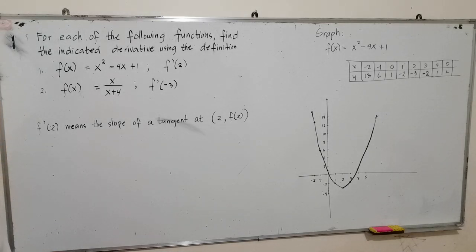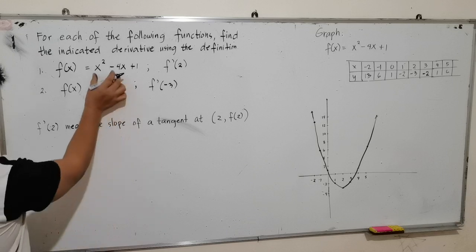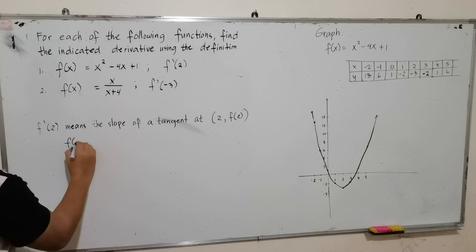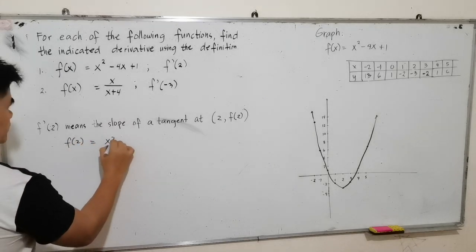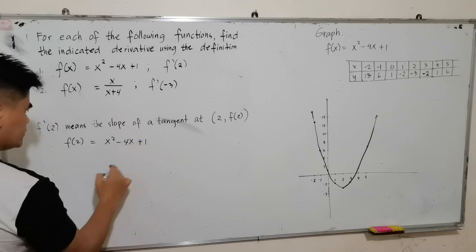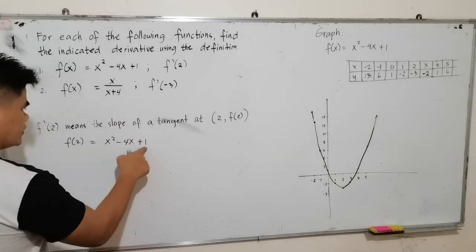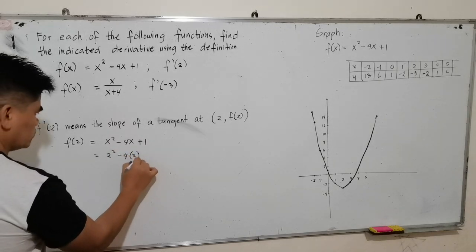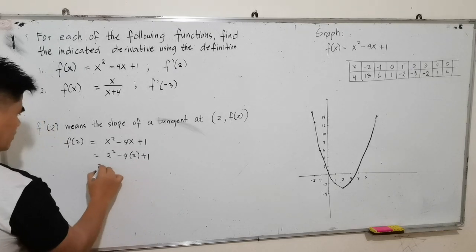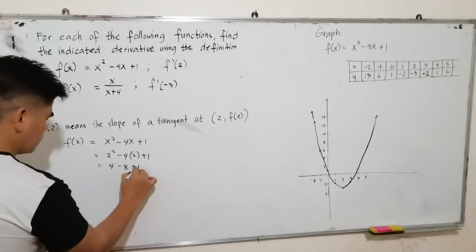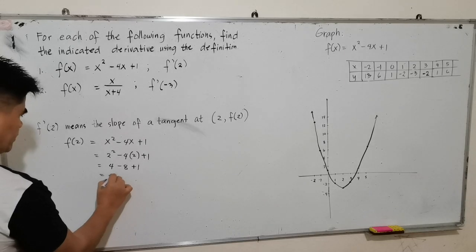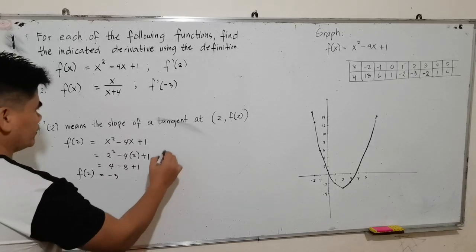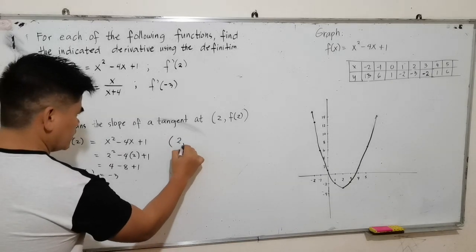Let us solve first the function at 2. So f at 2, with f(x) = x squared minus 4x plus 1, we substitute 2 in every x. That will be 2 squared minus 4 times 2 plus 1, so that will be 4 minus 8 plus 1, which is equal to negative 3. This is f at 2.